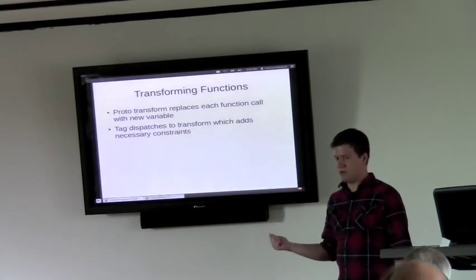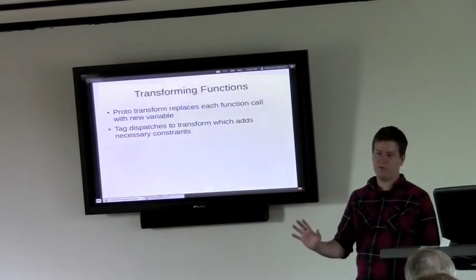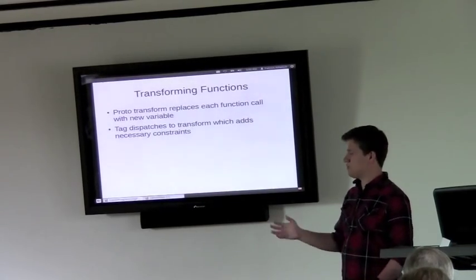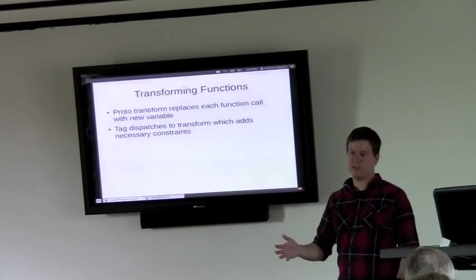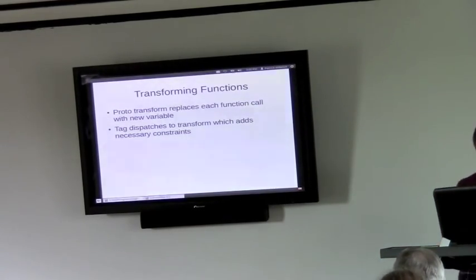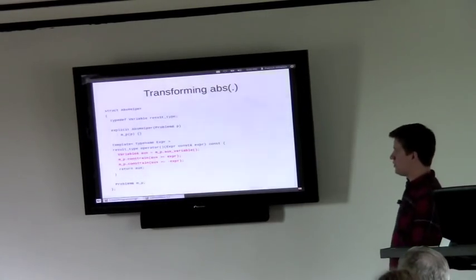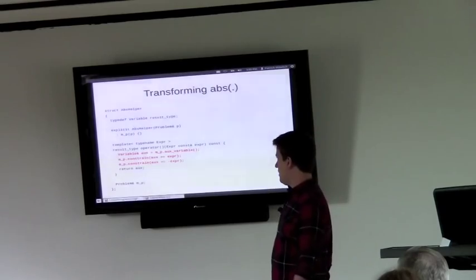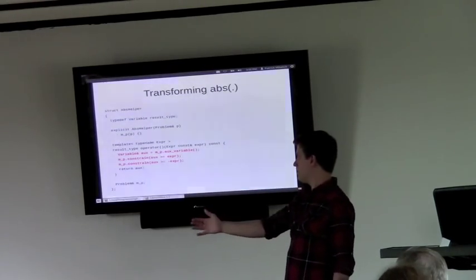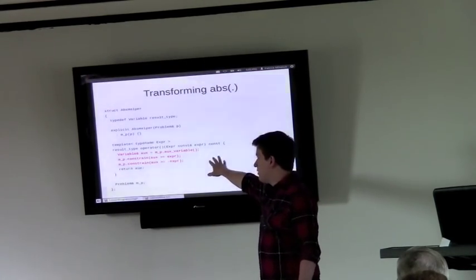So for minimum it's very similar. You replace, they call it a minimum with a new variable, y. And then you add a couple of constraints on y. So for the minimum it's less than or equal to both arguments. And so this is basically another search and replace operation. So it's perfect for doing proto-transform.